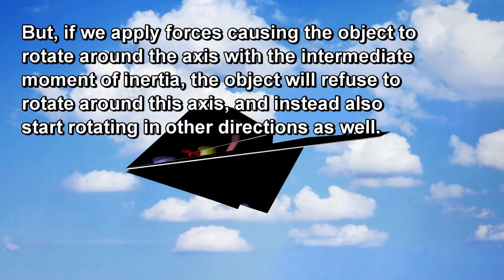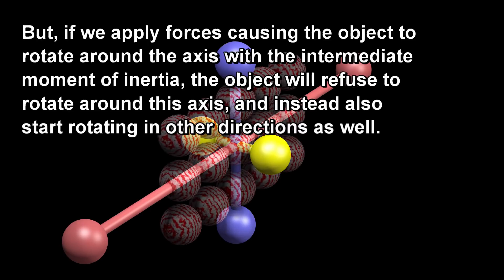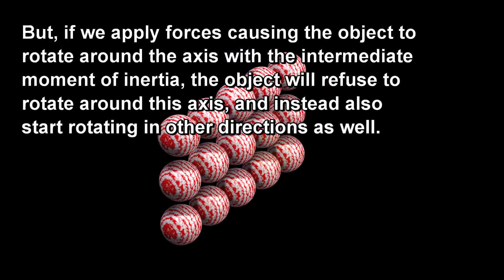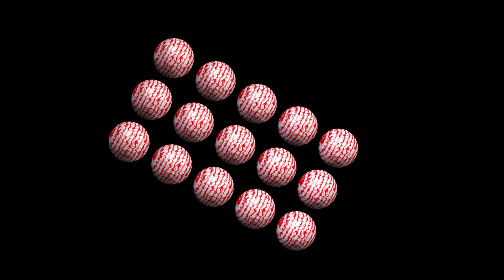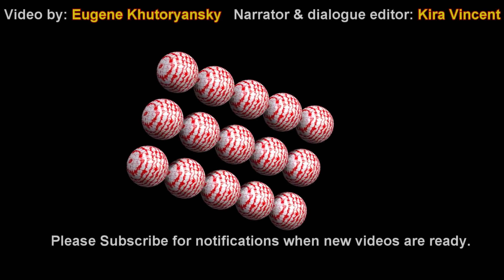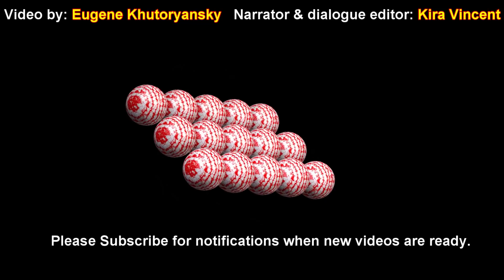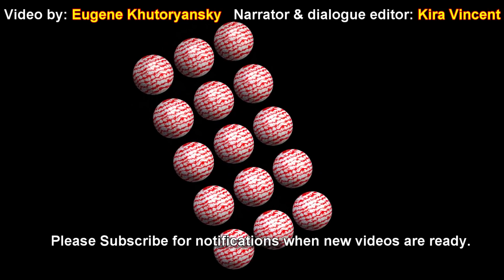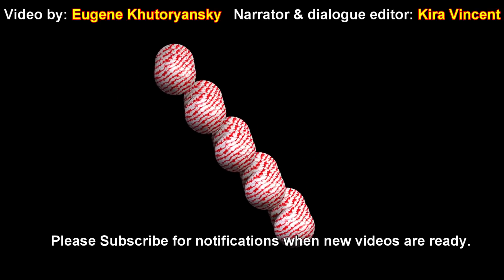But if we apply forces causing the object to rotate around the axis with the intermediate moment of inertia, the object will refuse to rotate around this axis and instead start rotating in other directions as well. More information about stability analysis for all different types of systems is available in the video Stability Analysis – State Space – 3D Visualization. Please subscribe for notifications when new videos are ready, and if you are able to, please consider supporting us on Patreon through the link in the video description. Thank you.